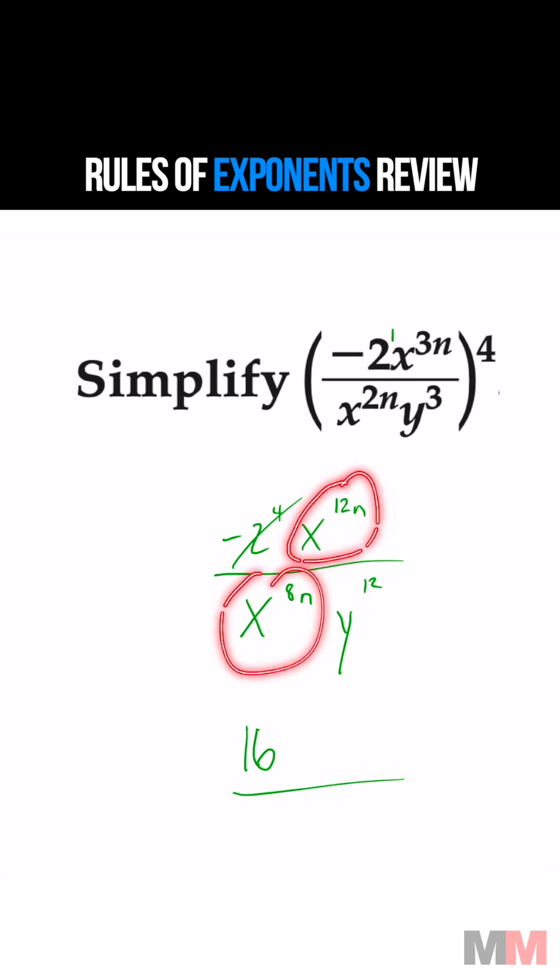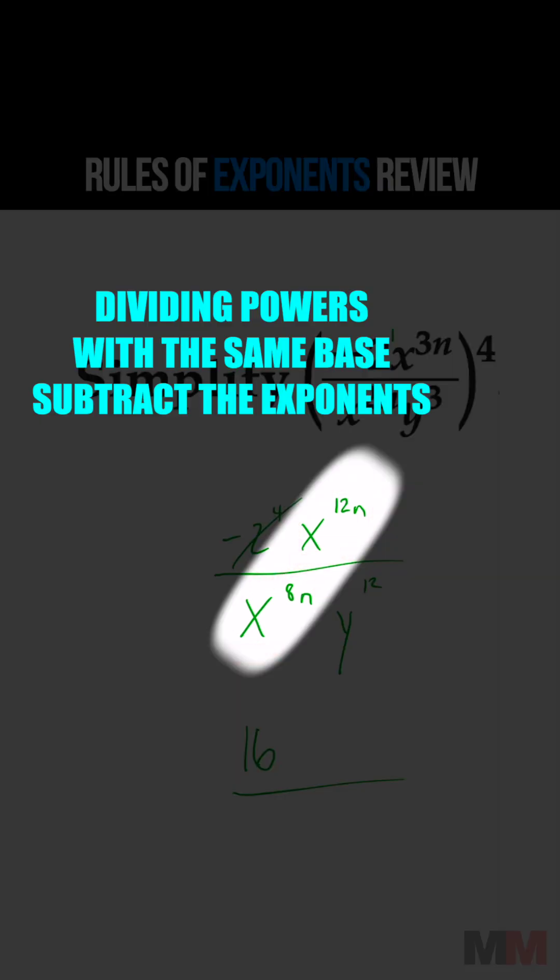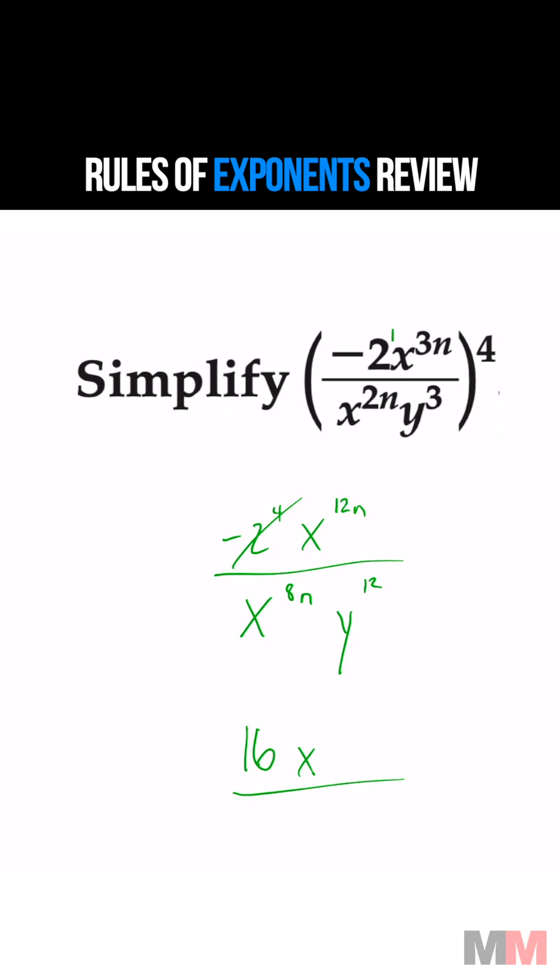If you're dividing powers and they have the same base, all you have to do is subtract the exponents. 12n minus 8n is 4n, and we're going to leave that on the top once again. So that's over with.